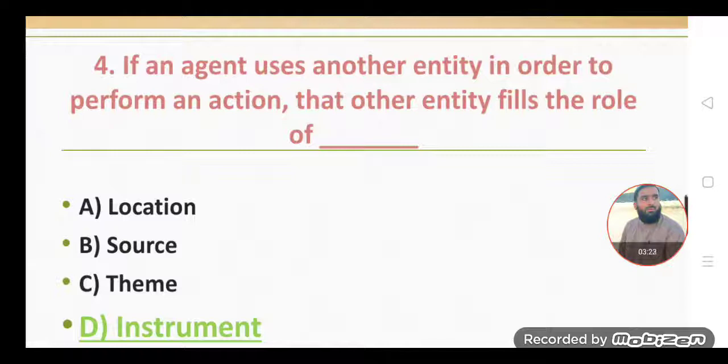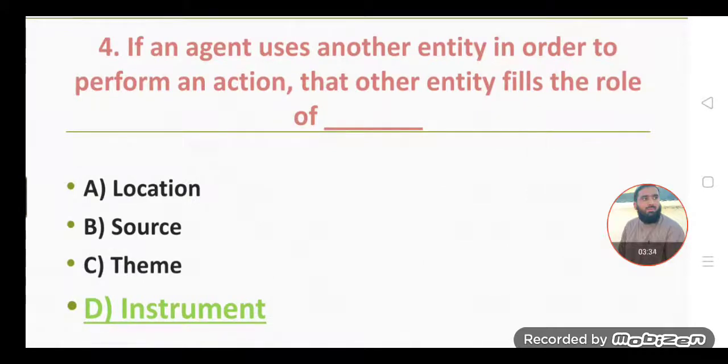If an agent uses another entity in order to perform an action, that other entity fills the role of instrument. If one entity uses another entity in order to perform an action, the other entity which is used by the agent is known as an instrument. Option D is the correct option.